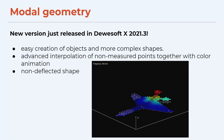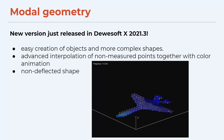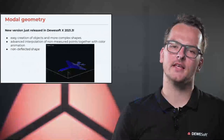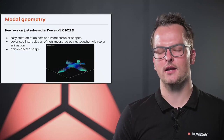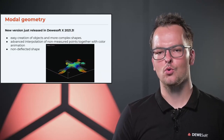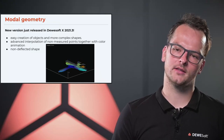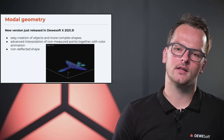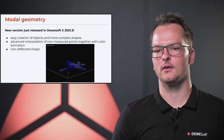The results from modal tests can also be animated. In the latest release we just released a new model geometry version where we support creation of objects like cylinders, spheres, cubes, and so on, making creation of complex shapes much easier and faster. We also implemented advanced interpolation of non-measured points together with color animation — previously we could only animate the points actually measured, but now unmeasured points connected to measured points with a line will also animate. We also implemented the possibility to show the non-deflected shape together with the deflected shape.